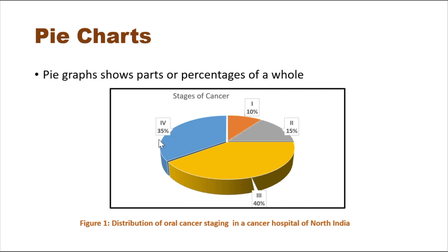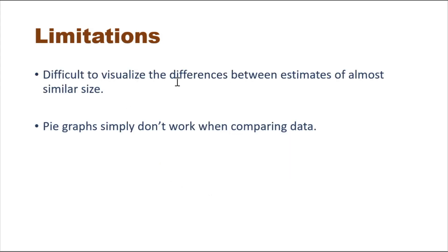Stage four accounts for 35 percent. One conclusion we can draw is that the majority of cases are at advanced stage — stage three plus stage four — meaning 40 plus 35, or 75 percent of cases, are diagnosed at an advanced stage. A recommendation would be that if we can detect cancer at an early stage, we might change this picture. A limitation of pie charts is that it is difficult to visualize differences between estimates of almost similar size; pie graphs simply don't work well when comparing data.